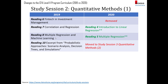For reading eight, multiple regression and machine learning — last year when machine learning was introduced into the syllabus it was placed at the end of the multiple regression topic. In 2020 they took out the machine learning portion, and what remains is now called reading five, multiple regression. Reading ten on excerpts from probabilistic approaches has been moved to study session three, but everything remains the same.